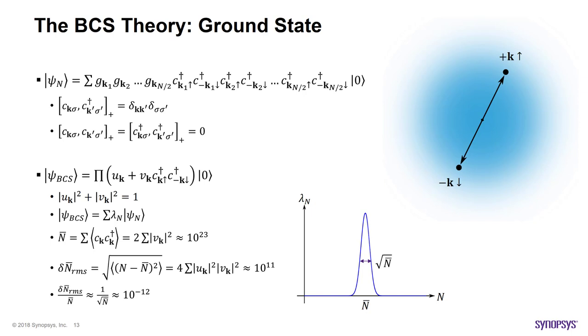The first thing we notice is that with this BCS ground state, we have lost particle number definiteness. We can see this more clearly if we expand the product to express the ground state as a superposition of states with different number of particle. However, this is no cause for concern. A simple number crunching shows that the particle number distribution is very sharply peaked around the average value. As a matter of fact, the more macroscopic the system, the smaller the relative particle number fluctuation. So far so good. Now, all that is left is to determine the form of u sub k and v sub k, which is what we will do next.